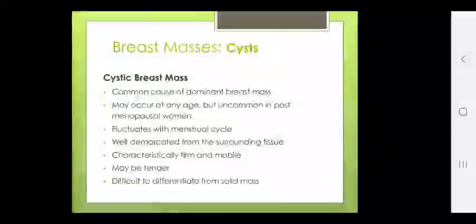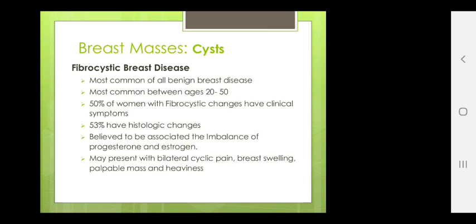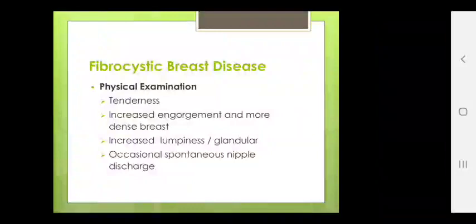Fibrocystic breast disease is the most common of all benign breast diseases. Common age is between 20 to 50 years. 50% have clinical symptoms and 53% have histologic changes. Believed to be associated with imbalance of estrogen and progesterone. May present with bilateral cyclic pain, breast swelling, palpable mass and heaviness. Physical examination shows tenderness, increased engorgement, more dense breast, increased lumpiness, glandular texture, and occasional spontaneous nipple discharge.